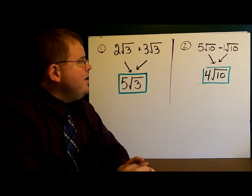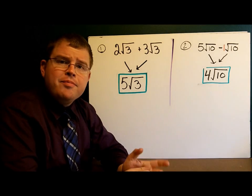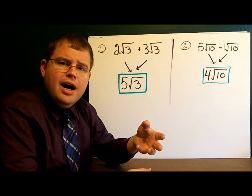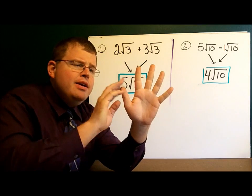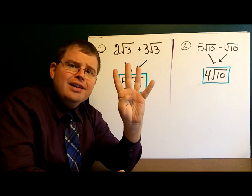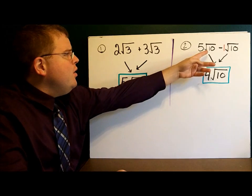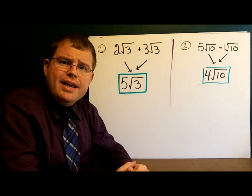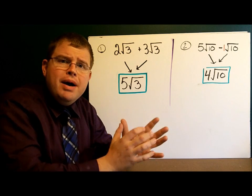Over here, we have 5 square roots of 10 minus the square root of 10. Remember, when there's no number in front of the square root, it's automatically 1. So we have 5 square roots of 10 take away 1 square root of 10, which leaves us 4 square roots of 10. Basically, all I'm looking for are things that have the same radicand — the same number under the radical — and I'm combining them together.